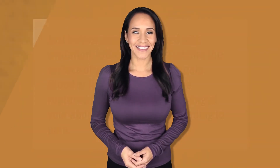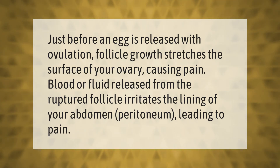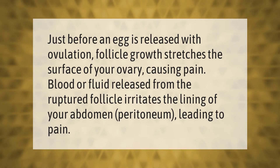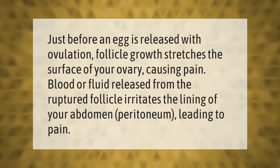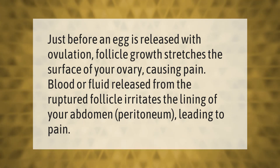Just before an egg is released, follicle growth stretches the surface of your ovary, causing pain. Blood or fluid released from the ruptured follicle then irritates the lining of your abdomen — the peritoneum — leading to further pain.